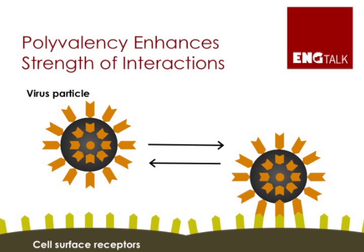This attachment step is often the first step in infection. In this case, the step is polyvalent, because it involves the simultaneous attachment of multiple viral proteins — in this case the brown stickers — to multiple receptors on our cells — in this case the yellow stickers.